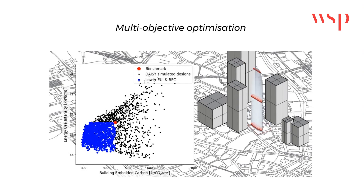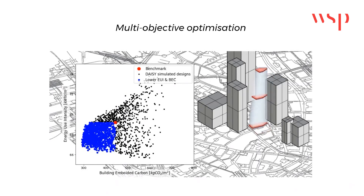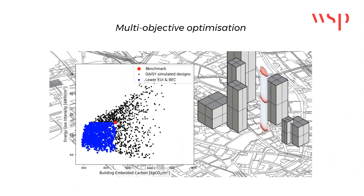With multi-objective optimization, we can now identify all the design options that offer improvements from the benchmark, as shown by the blue shaded area. Moving in this direction represents a Pareto improvement, empowering designers and clients to make more informed decisions at the early stages of the design process.